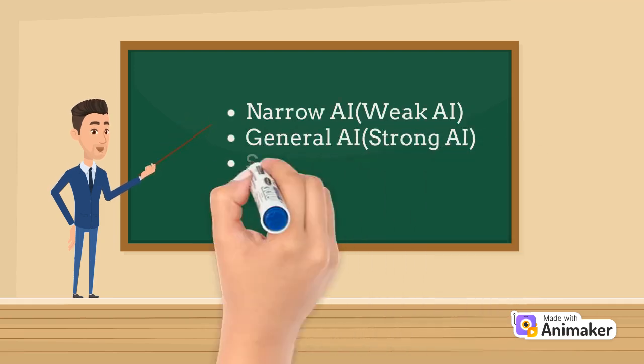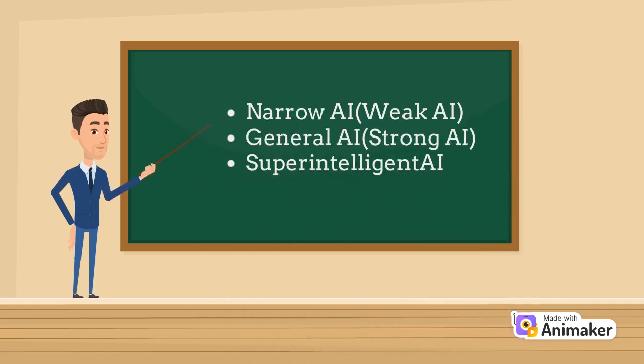AI can be categorized into three main types. Narrow AI (Weak AI): This type is designed for a specific task, like voice recognition or playing chess. Most of the AI we encounter today is narrow AI.